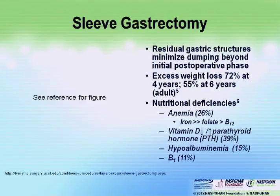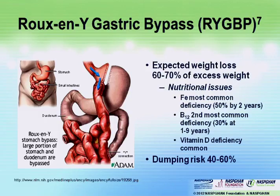With the sleeve, remember you're losing part of the antrum and losing intrinsic factor. Vitamin D deficiency, hypoalbuminemia, and thiamine deficiency can also develop depending on how compliant they are with diet and intake — occurring in about 10% of cases.